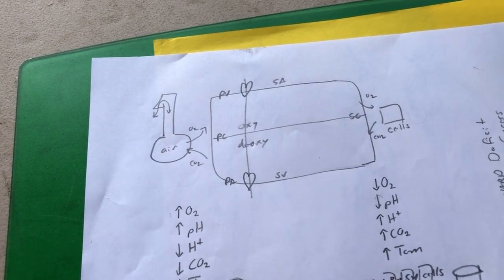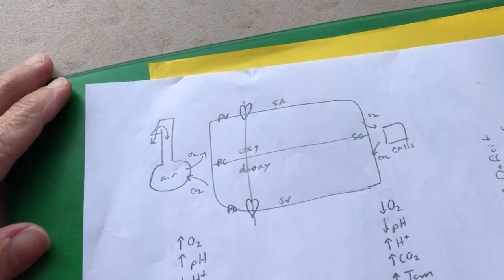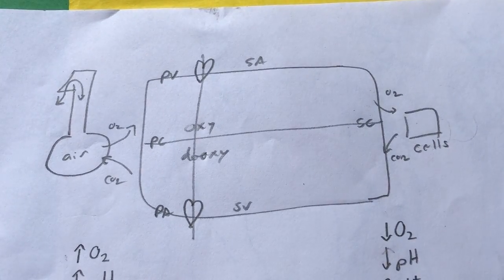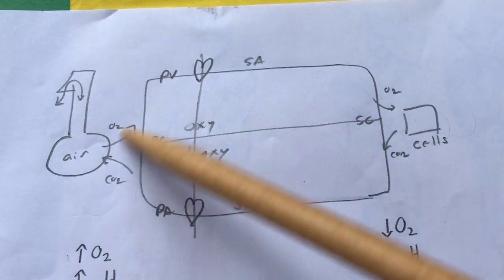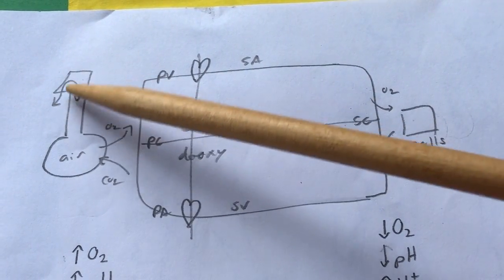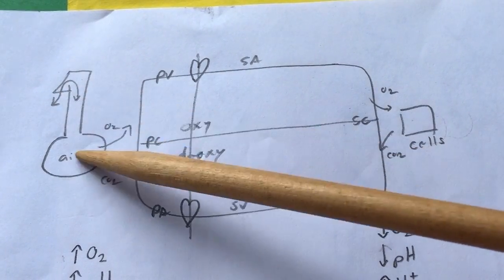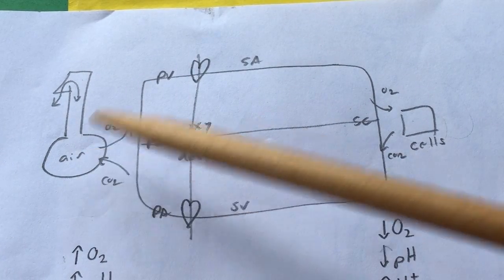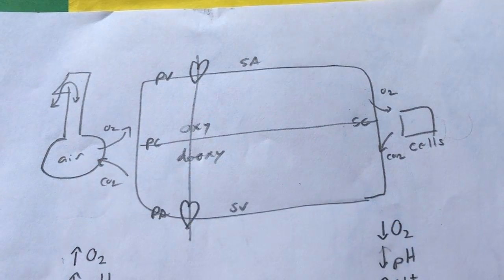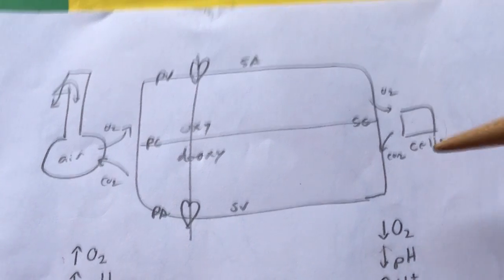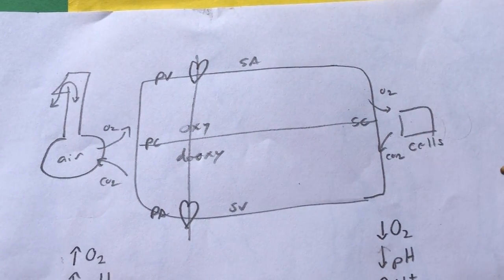We'll start off with a mnemonic diagram we've been using. This picture represents the circulatory system on one side and the pulmonary system on the other. There's the upper respiratory system where air goes in and out, and the alveoli with air inside. The purpose is to provide oxygen to the blood and allow carbon dioxide to leave the blood. On the other side we have the hard-working cells, which need the oxygen and create the carbon dioxide.